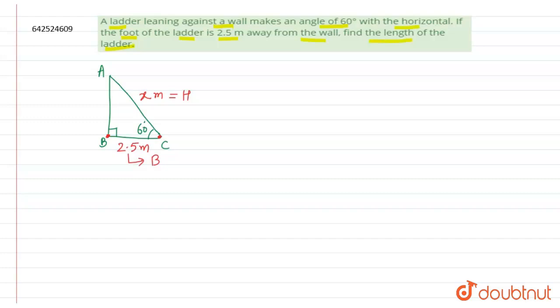That means base is 2.5 meter and hypotenuse will be x. And we all know that cos 60 is equal to half. So now cross multiplying, what do we get? x will be equals to 2.5 into 2 meters.